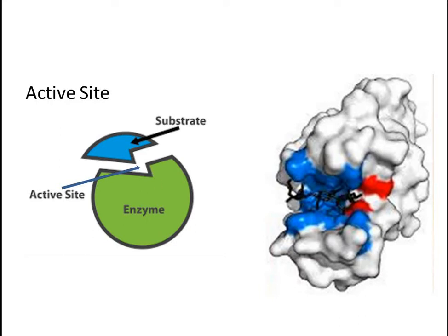The active site is the actual binding site. The active site has two components: the binding site and the catalytic site. The amino acids present at the binding site are responsible for holding the substrate in the vicinity of the catalytic site. So the amino acids actually make up the active site.